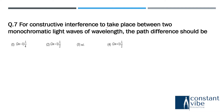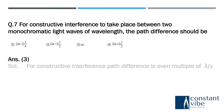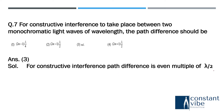Question seven: for constructive interference to take place between two monochromatic light waves of wavelength λ, the path difference should be n·λ. For constructive interference, the path difference is an even multiple of λ/2, that is, λ, 2λ, and so on — even multiples of λ/2.